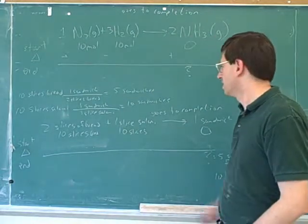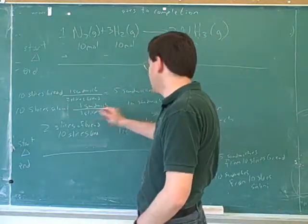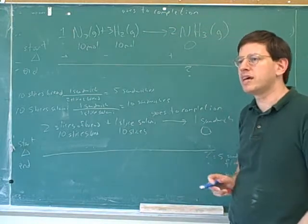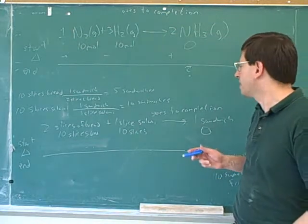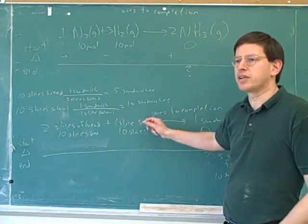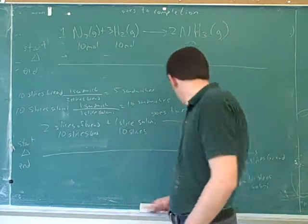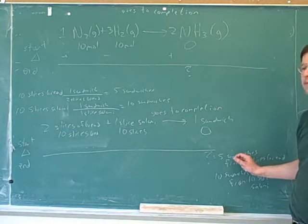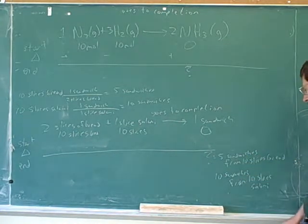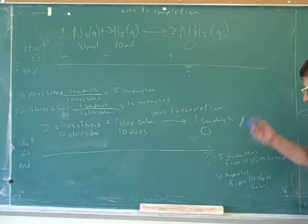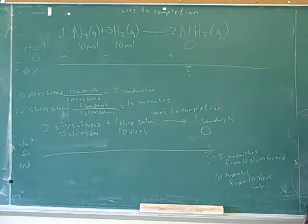Now, it seems like we have a contradiction here. Five sandwiches from the bread and ten sandwiches from the salami. But what does that tell us? Well, I'm trying to use a common, ordinary example so we can see the common sense of this. What this is telling us is we have enough bread to make five sandwiches and we have enough salami to make ten sandwiches. So if we make the maximum possible number of sandwiches, how many sandwiches are we going to make?